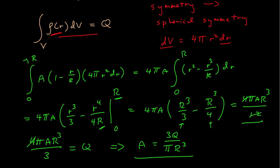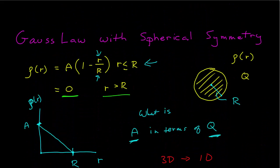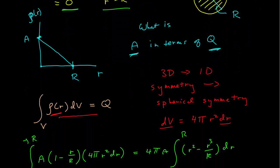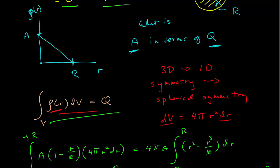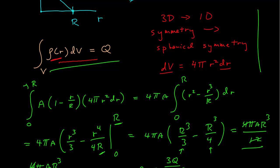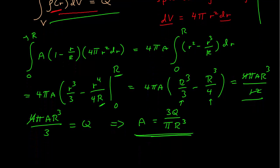So here we used symmetry and a charge density function that only depends on r to integrate over the entire charge, practicing with spherical symmetry to find this constant in terms of our total charge Q and the radius. I'll do a second video for part two of this problem, where we actually use Gauss's law to find the electric field.